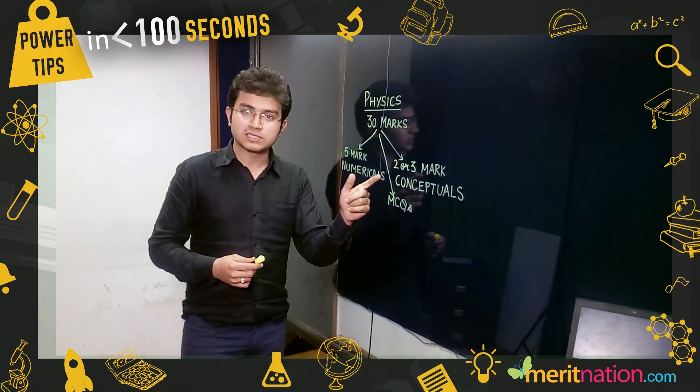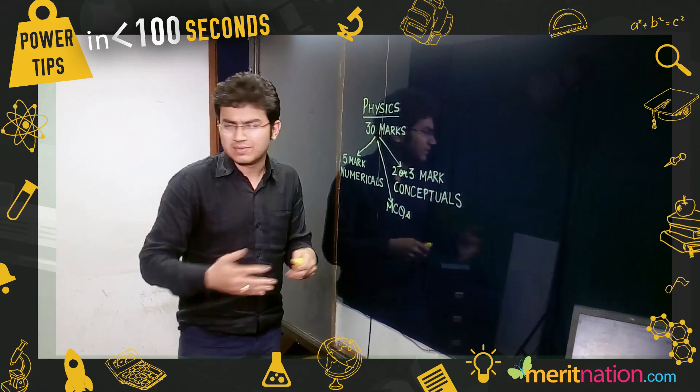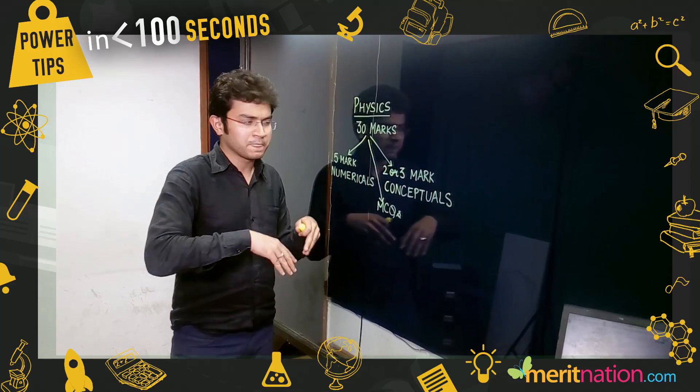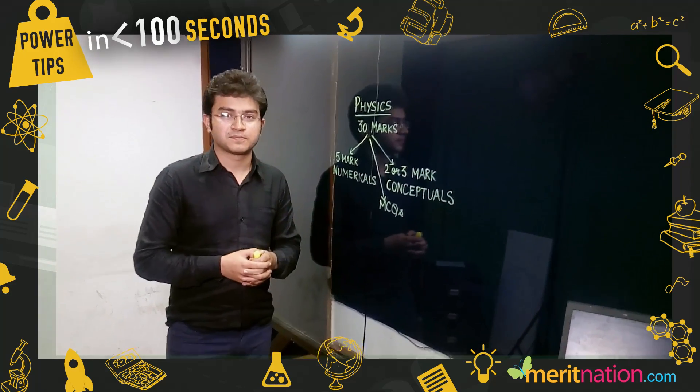Lastly, for two or three-mark conceptual questions, be very precise. These questions will mostly come from the second chapter, covering topics like scattering of light or rainbow formation. You have to be precise with those answers.